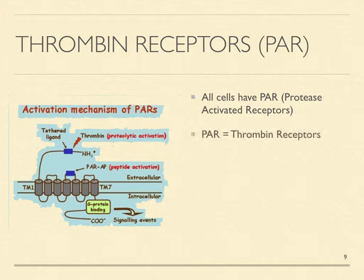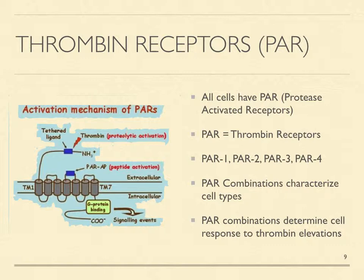Protease activated receptors, or PAR, were unknown in the era of stress research. PAR are thrombin receptors, and all cells have PAR on their surface. At least four types of PAR have been discovered thus far: PAR1, PAR2, PAR3, and PAR4. Individual cell types are characterized by PAR types and numbers that determine how the cells react to thrombin elevations.